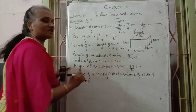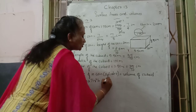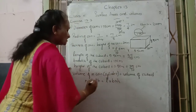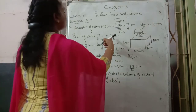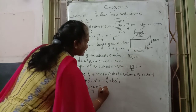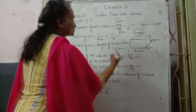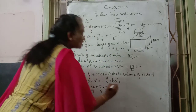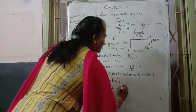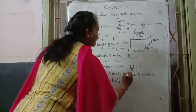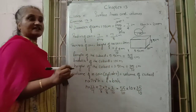Volume of n coins = volume of cuboid. Formula for volume of a cylinder is π r² h. Volume of a cuboid is length × breadth × height. So: n × (22/7) × (7/8)² × (2/10) = (55/10) × 10 × (35/10). Now we cancel terms: radius squared is (7/8)², and height of coin is 2/10.